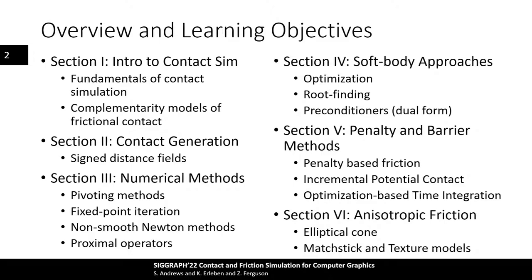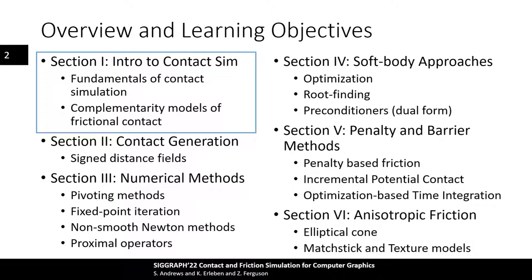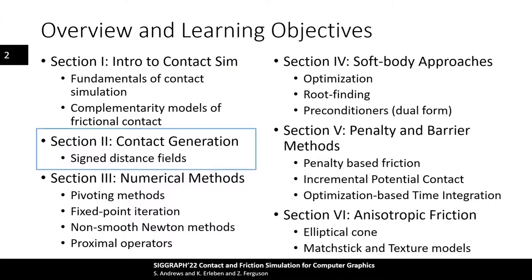We begin the course with a concise introduction to multibody dynamics, with an emphasis on constraint-based formulations of contact models. This allows us to see the non-linear nature of the contact problem, as well as linear approximations common in computer graphics. Then we will look at how contacts are generated from object geometry, showing how components of the contact models are computed from various shape representations. We focus specifically on signed distance fields, a popular choice for collision detection, though collision between a wider variety of shapes is covered in the notes.